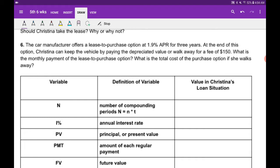Okay, so buy the car for what it's worth or walk away but pay $150. What is the monthly payment of the lease to purchase option and what is the total cost of the purchase option if she walks away?